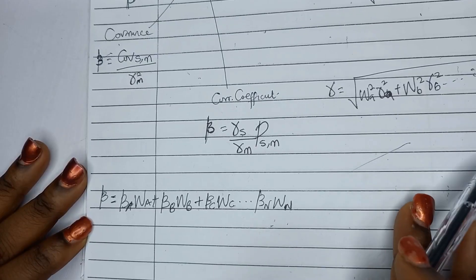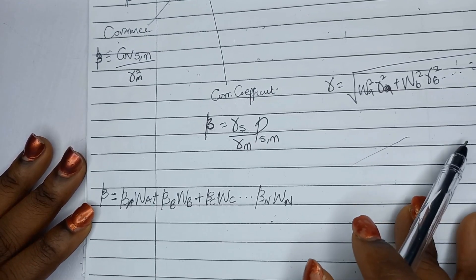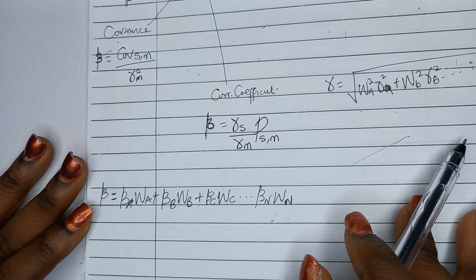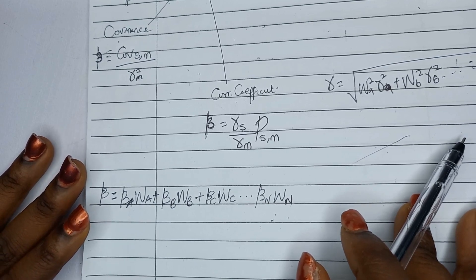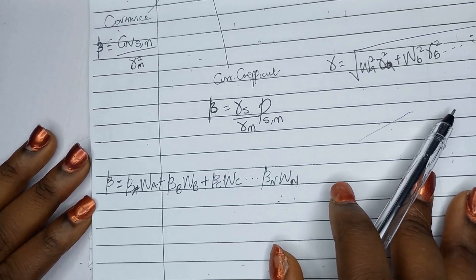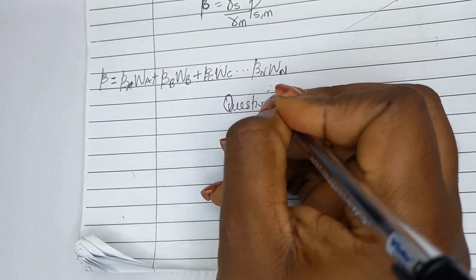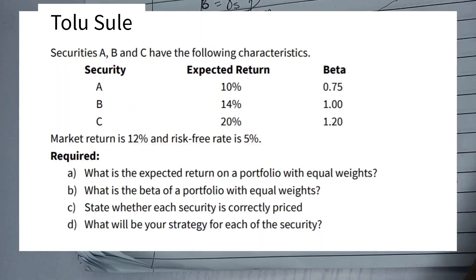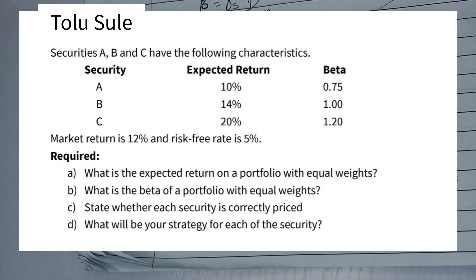Apart from systematic risk, another thing we're going to cover in this class is portfolio stock valuation — that's alpha values. Before that, let's look at the question on the screen. Securities A, B, and C have the following characteristics: security A has an expected return of 10%, security B has 14%, and C has 20%.